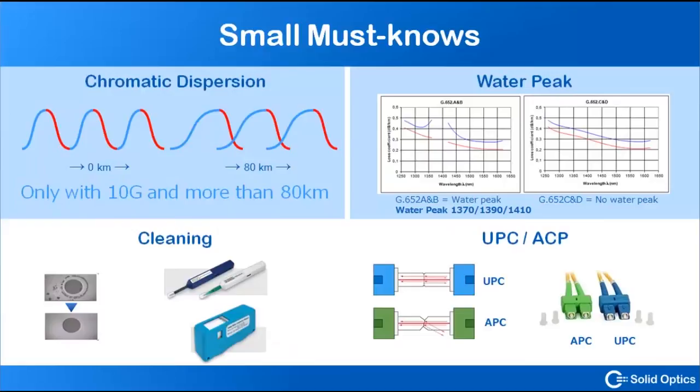The last slide are just some small must-knowns about fibers. With 10 gig and above 80 kilometers, you've got something called chromatic dispersion. And that's only with 10 gig and above 80 kilometers, so if you've got 1 gig or 2 gig, you don't have to take this into account. And that's the fact when the waves are overlapping each other. We've got a different presentation that will explain how you can compensate the chromatic dispersion.